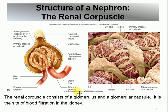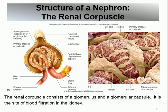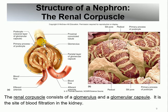In a closer view: blood enters through the afferent arteriole, goes to the glomerulus, and a good part is filtered out into the capsular space inside the glomerular (Bowman's) capsule. The rest of the blood leaves through the efferent. The capsular space — the space between the glomerulus and the capsule — collects the filtrate, which then moves into the proximal convoluted tubule.